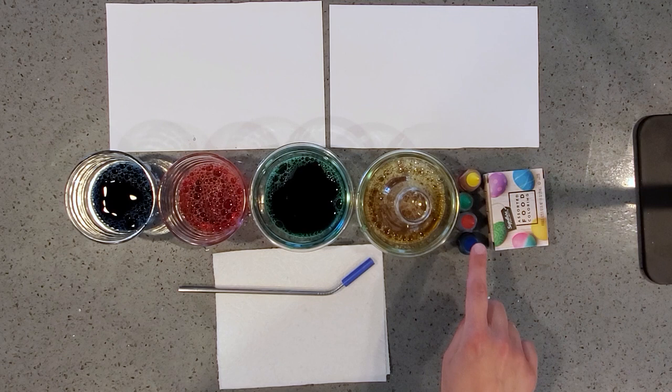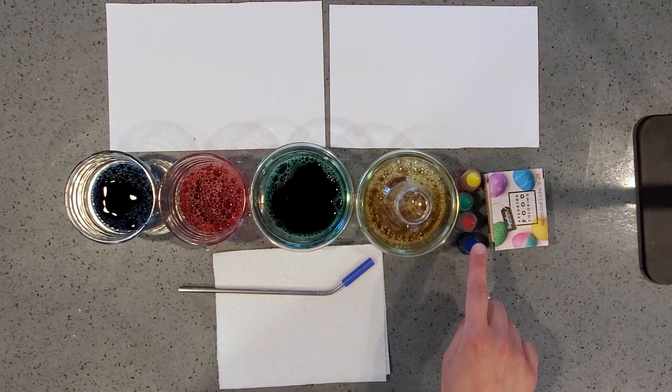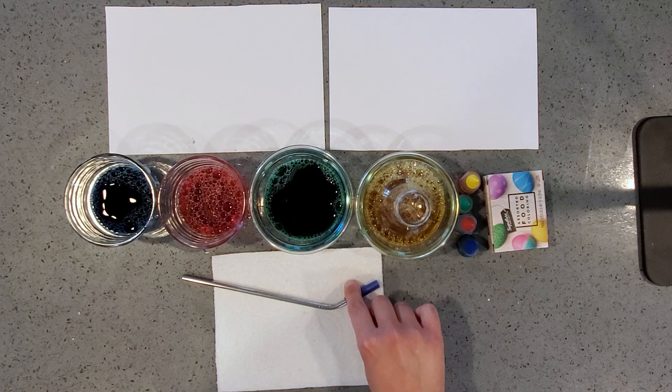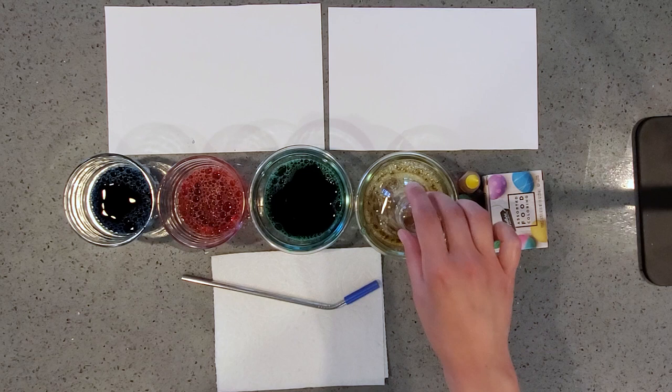For this project you will need paper, liquid food coloring, a straw - you can use a plastic straw or a metal straw, a water bottle that you cut the top off of, and bubble solution.